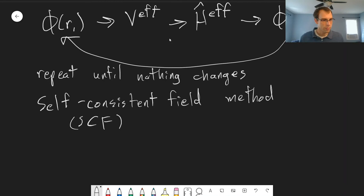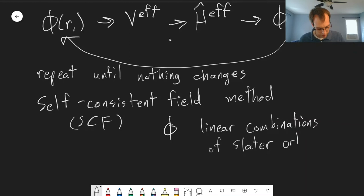Now what do these phi look like? So phi is generally defined as linear combinations of Slater orbitals. And we'll get into this a little bit more when we talk about computational chemistry, where this is actually implemented. Linear combinations of Slater orbitals with variational parameters. So we have a bunch of things that we can change, and that's what we use to actually change things between iterations.